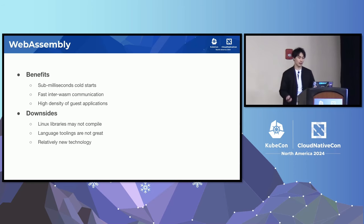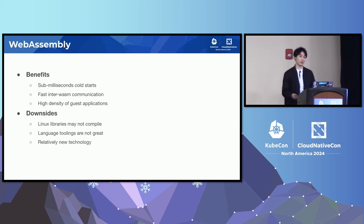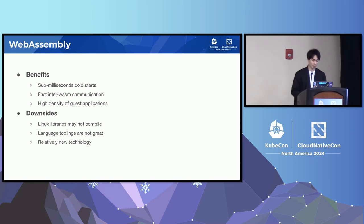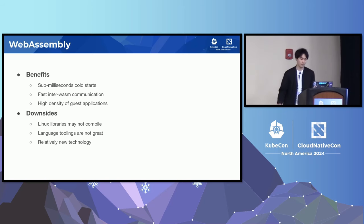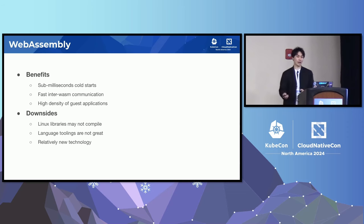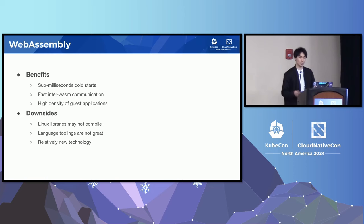WebAssembly, on the other hand, has sub-millisecond cold starts. This is really attractive because you can start a new WebAssembly instance per request. It also has fast inter-Wasm communication — you can compose two Wasm components together and their communication is a local function invocation, enabling high density for guest applications. Downsides for WebAssembly include: not every Linux binary can be compiled to WebAssembly, some system calls may not be supported, and language tooling is still maturing. Wasm is also a relatively new technology, so some security boundaries still need to be production-tested.